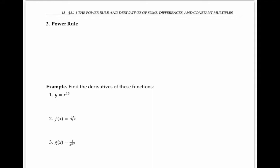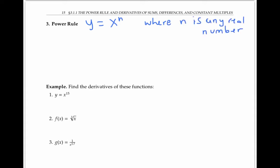These two simple examples are actually special cases of the power rule, which is one of the most useful rules for calculating derivatives. The power rule says that if you have the function y equals x to the n, where n is any real number, then you can find the derivative dy/dx simply by pulling that exponent n down and multiplying it in the front, and then reducing the exponent by one. So for example, if you want to calculate the derivative of y equals x to the 15th, dy/dx is just going to be 15 times x to the 14th.